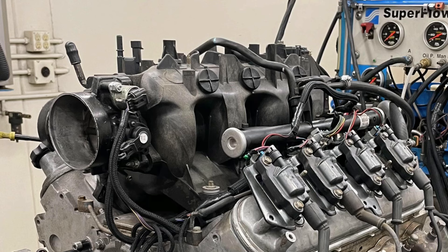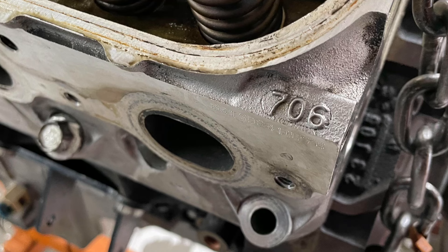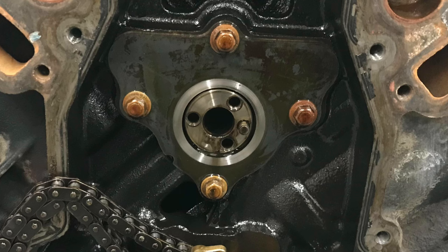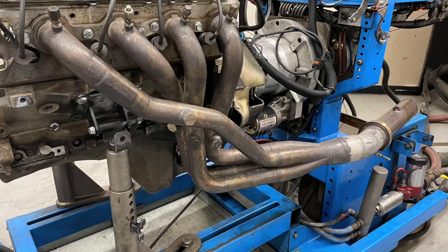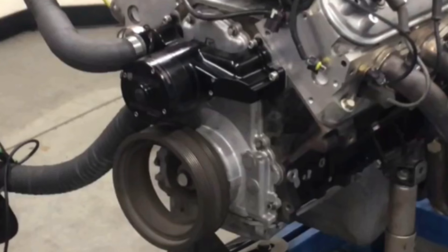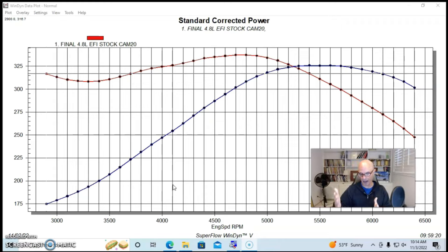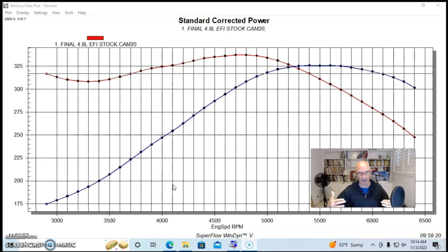We ran our 4.8 liter on the engine dyno with the factory truck intake manifold and throttle body, the stock 706/862 heads because they make the same power, it had a stock camshaft in it, it had long tube headers, inch and three quarter long tube headers with collector extensions. It had no accessories and no air intake, which is why this makes more power than we see versus the rated number offered by GM. We ran it with a Holley HP/Terminator X.